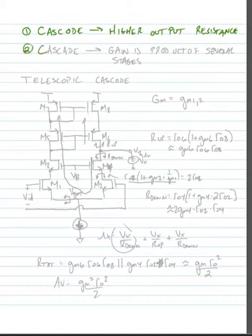Another way that we can do it is by using a cascade. In a cascade, we have a gain that's the product of several stages, so it's very large.